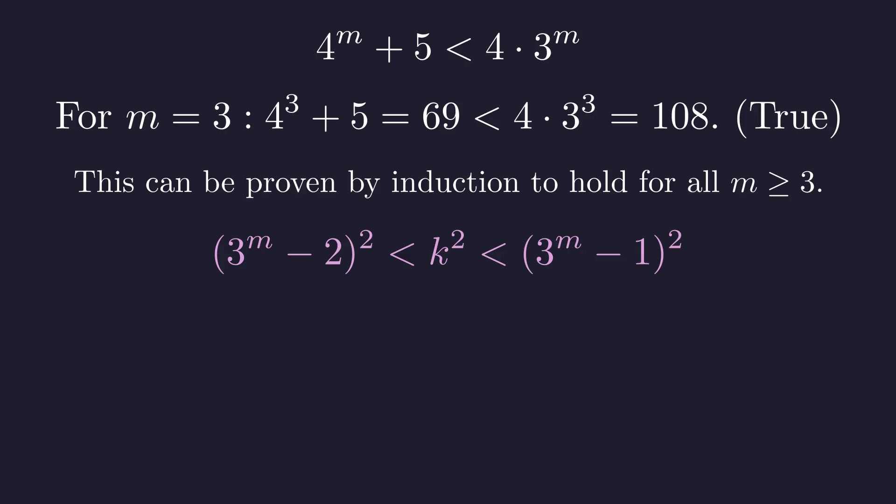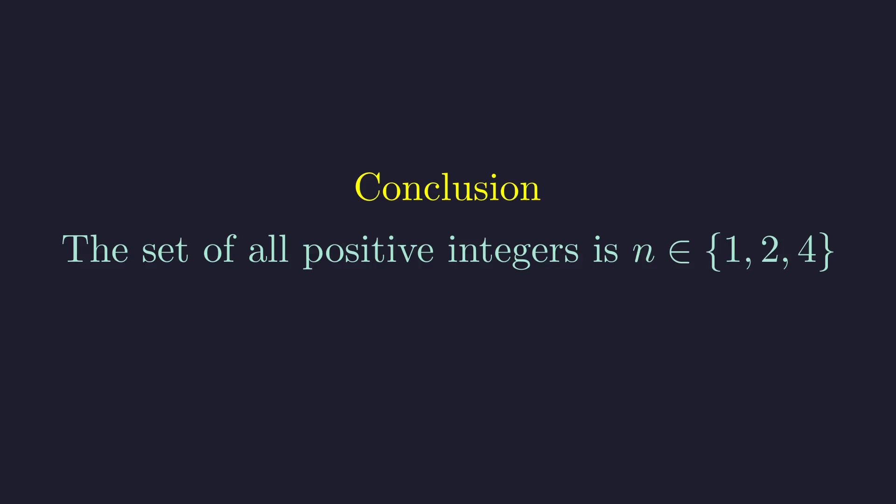So we've proven that k squared is trapped between two consecutive perfect squares, which means it can't be a perfect square itself. So let's put it all together. We found exactly three solutions: n equals 1, 2, and 4. That's it. No other positive integers work.